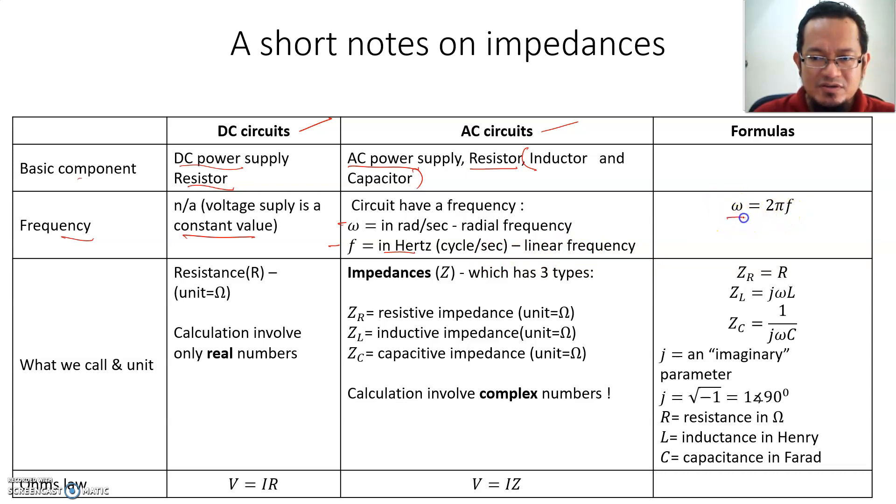The relationship between omega and the frequency is omega equals to 2πf. You can transform back and forth between radian per second to hertz using this formula. What we call a unit: the unit in DC circuit or DC bridge uses only resistance, it only involves real numbers, and the unit is ohm. But in AC bridge or AC circuit you're going to have three types of impedances. If you have a resistor we call it Z_R or resistive impedance, Z_L if you have an inductor, inductive impedance, and if you have a capacitor then we call it Z_C, capacitive impedance. All three components have the same unit which is ohm.